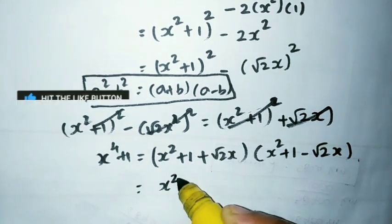We need to do x2, so x2 plus 1, so x2 minus root 2x, x2 plus 1. So x4 plus 1, we need to do x2, so let's get started.